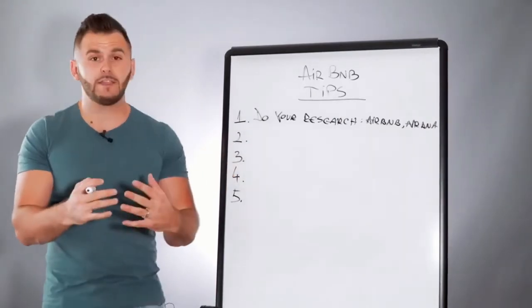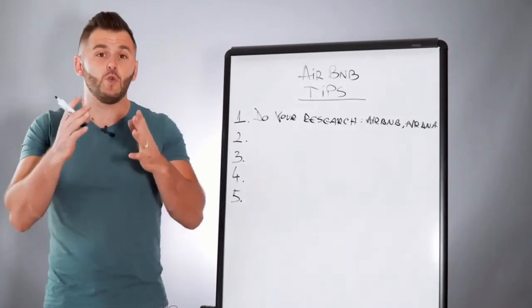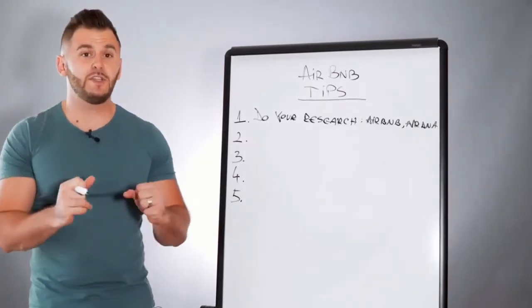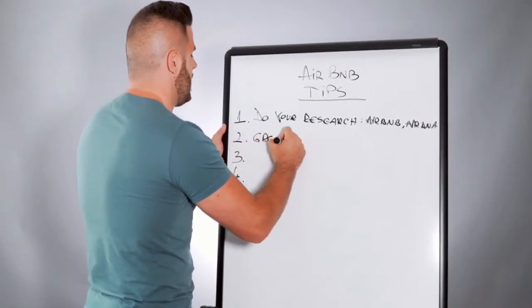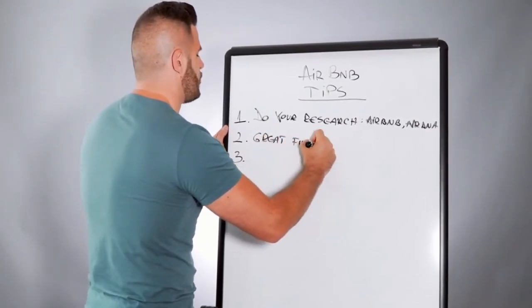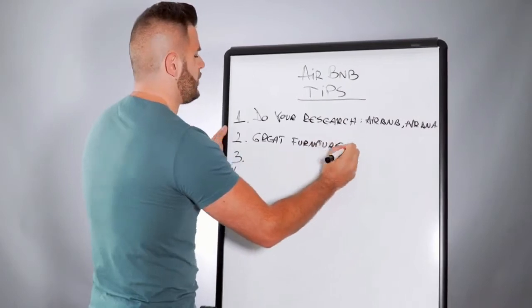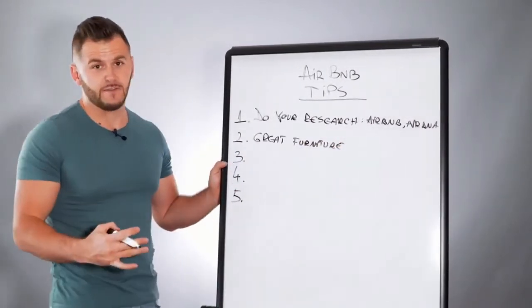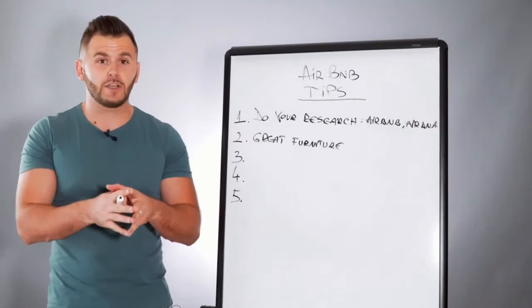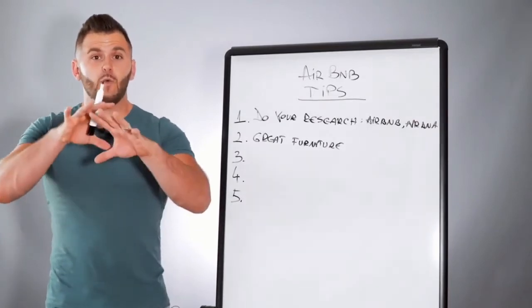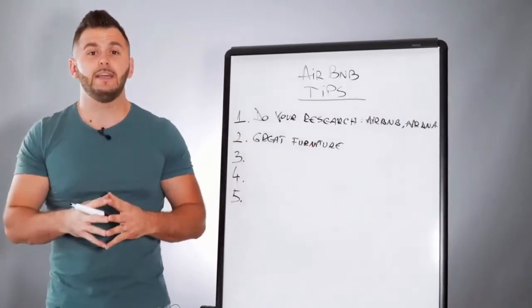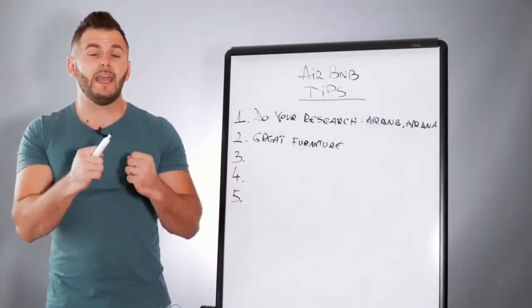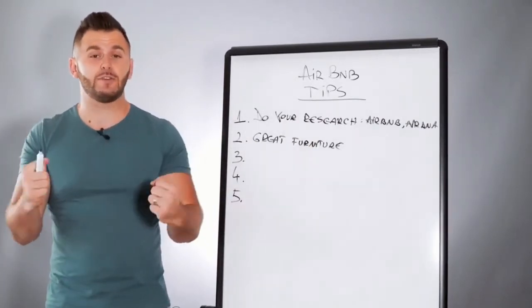Number two is the moment you're done with the research, you want to go to step two. So step two is use great furniture. Now, when I say great furniture, I don't necessarily mean expensive furniture. I mean furniture that looks great with the type of paint, with the type of color that the house brings.